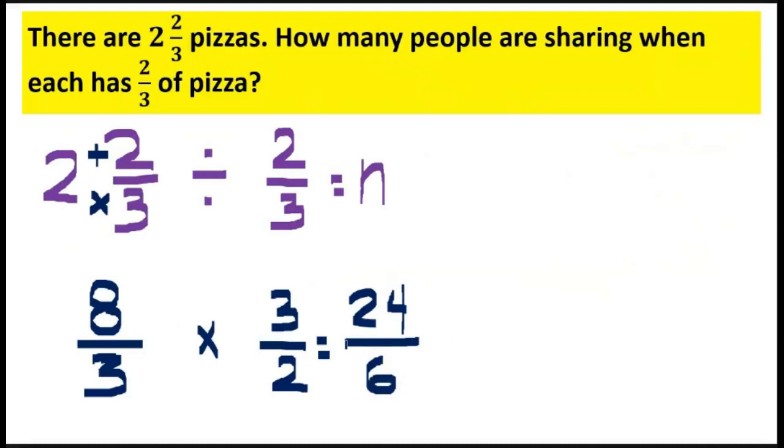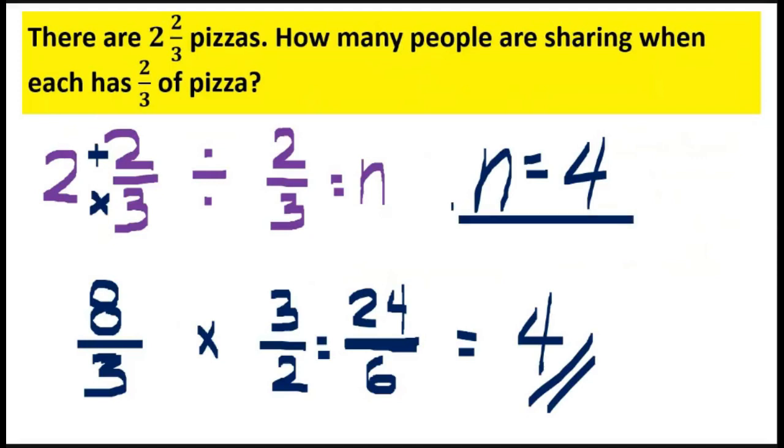As I have mentioned, the bar in a fraction indicates that the operation is division. So, 24 divided by six is equal to four. Therefore, we can say that the value of our n is four, and there are four people that will have two-thirds part of pizza each. That is our first example.